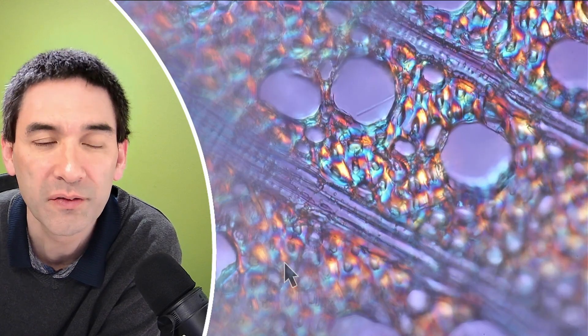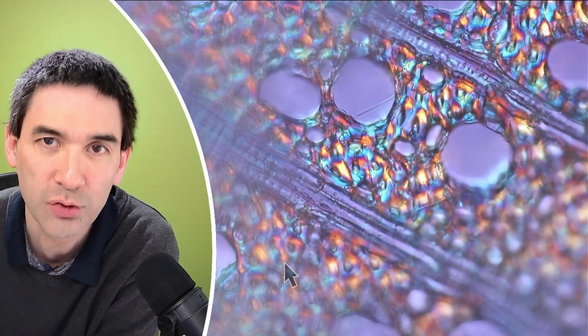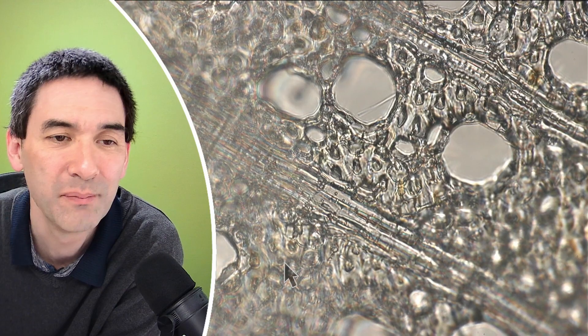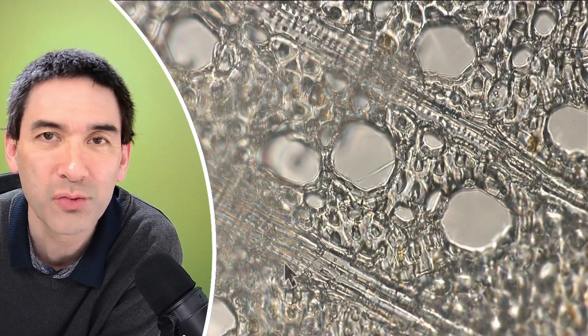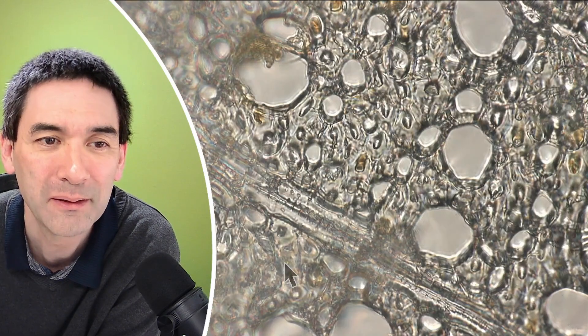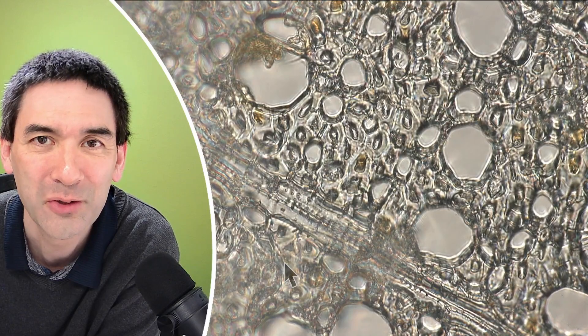The colors that you see here, that's because of the polarized light. Let's try bright field. Here in bright field you can see that all of the structures are still quite nicely visible, but of course not so many colors.